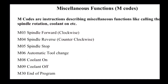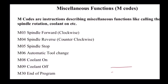M-codes are instructions describing miscellaneous functions like calling the spindle rotation, coolant, etc. M03 or M04 controls the spindle direction — forward or reverse. M05 stops the spindle. M06 changes the tool. M08 turns on the coolant and M09 turns it off. M30 is end of program. At the end of every G-code you will find M05 and M30. If you write M05 and M30 as your last two lines, you will receive grades for sure.